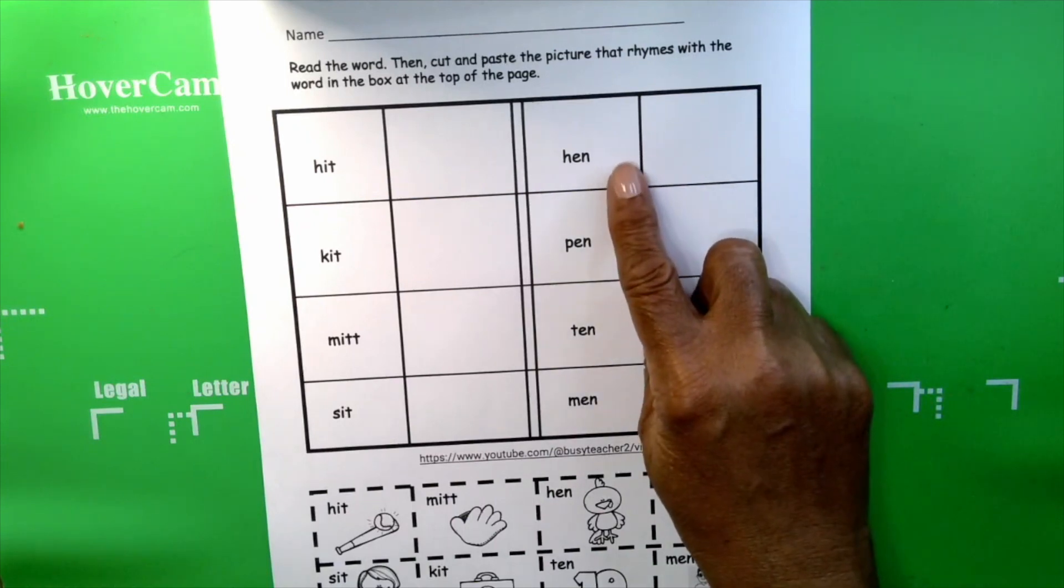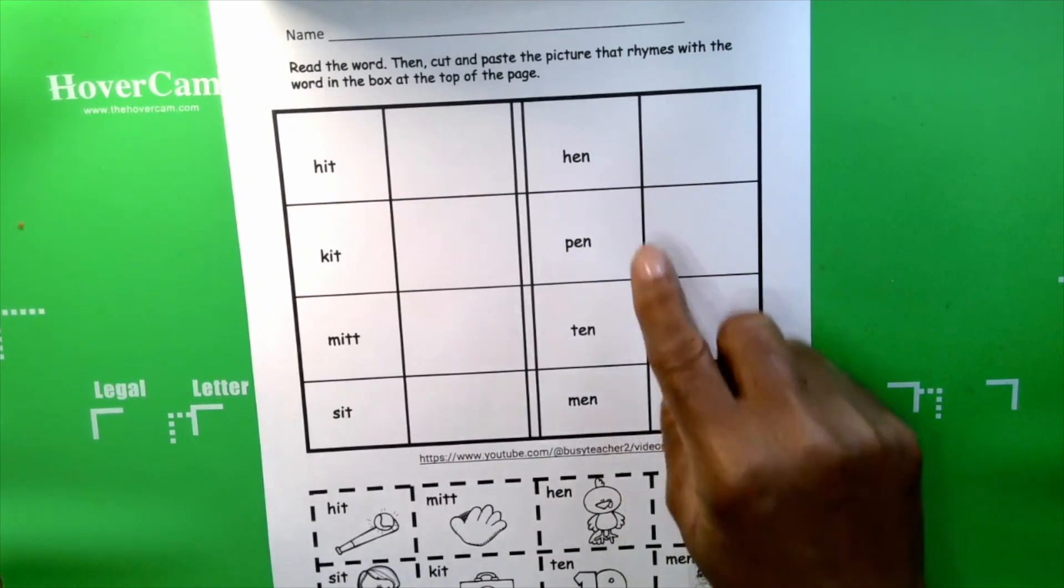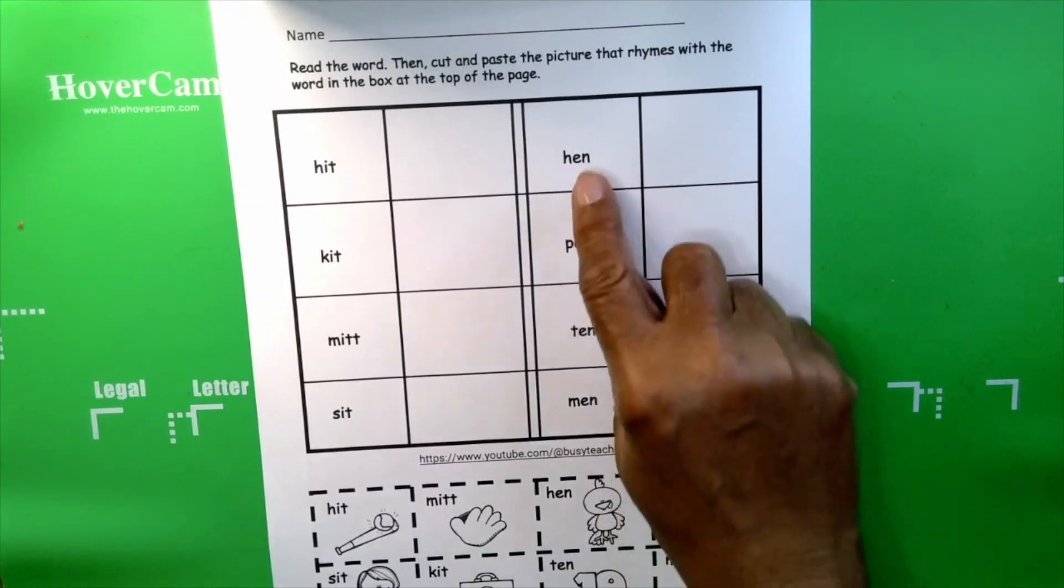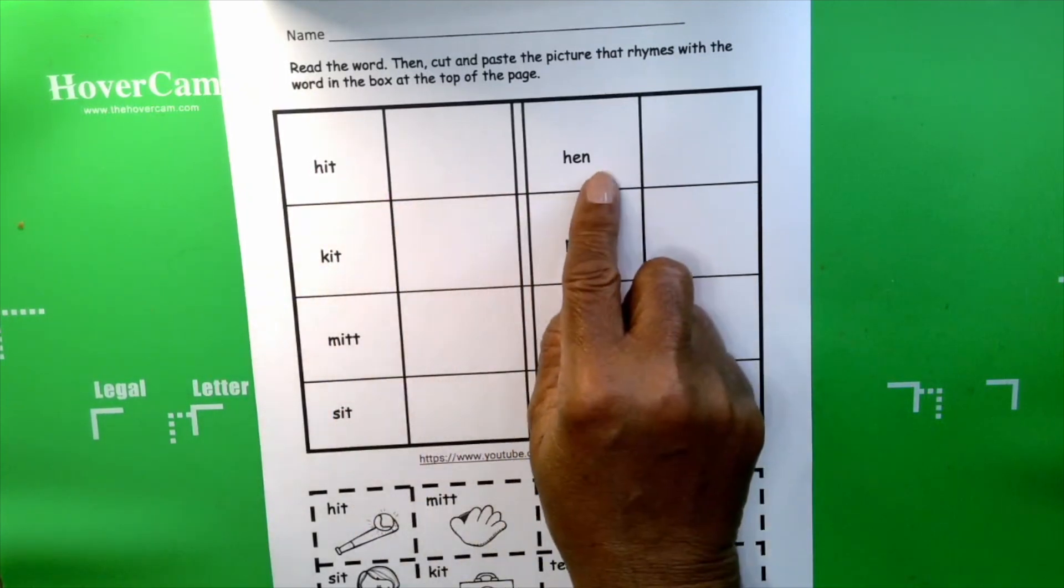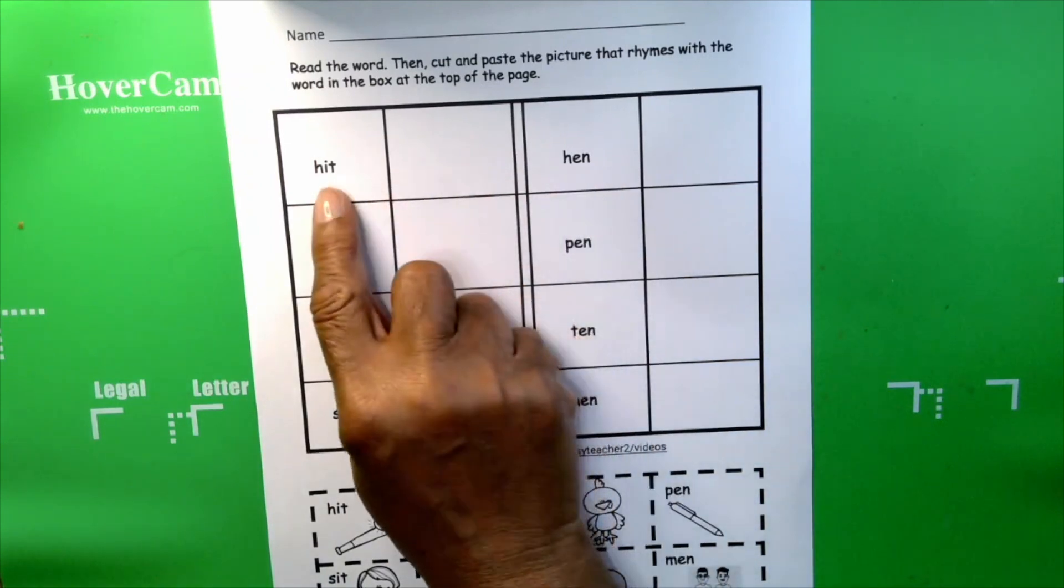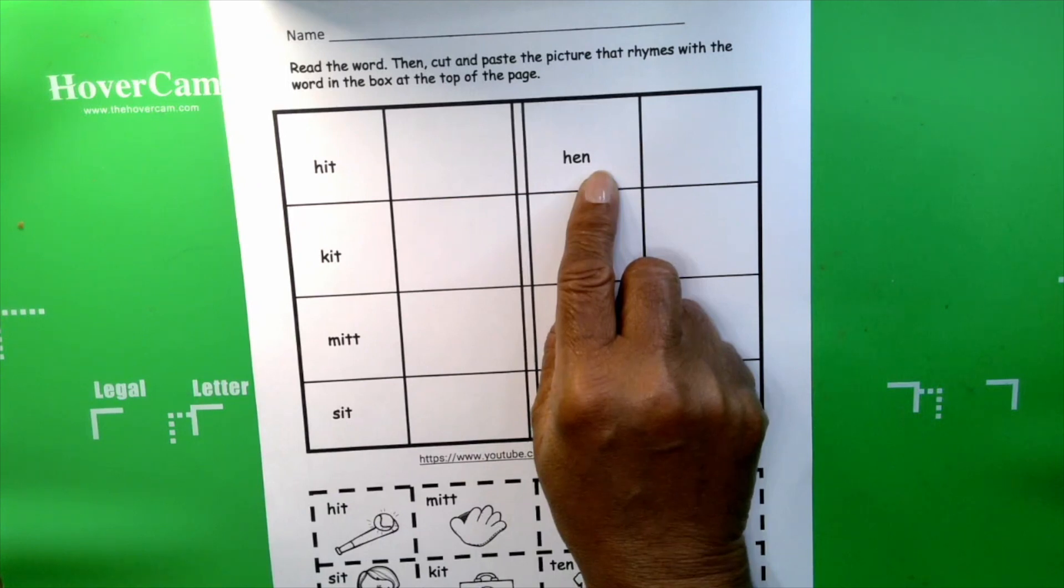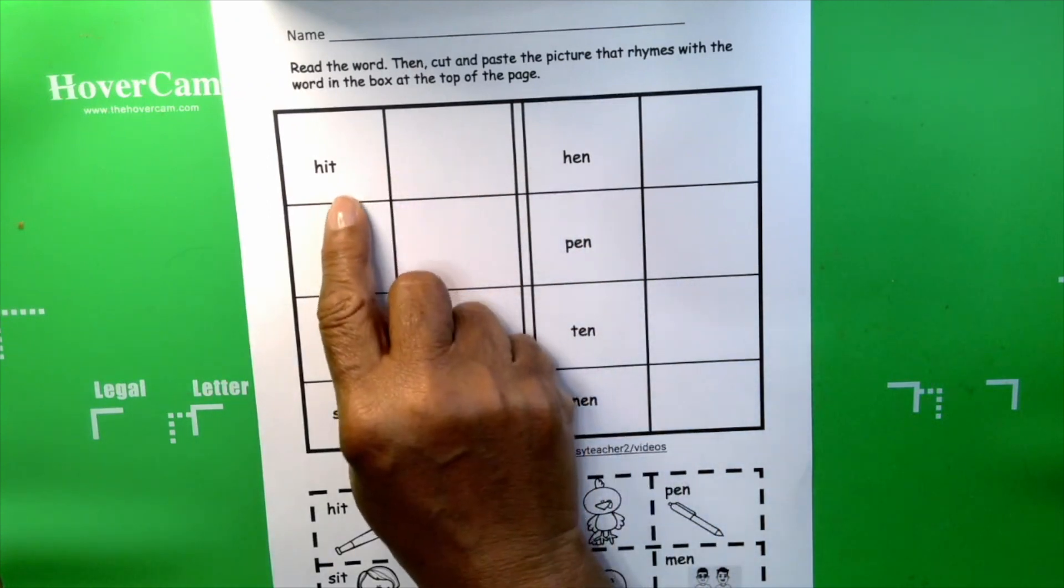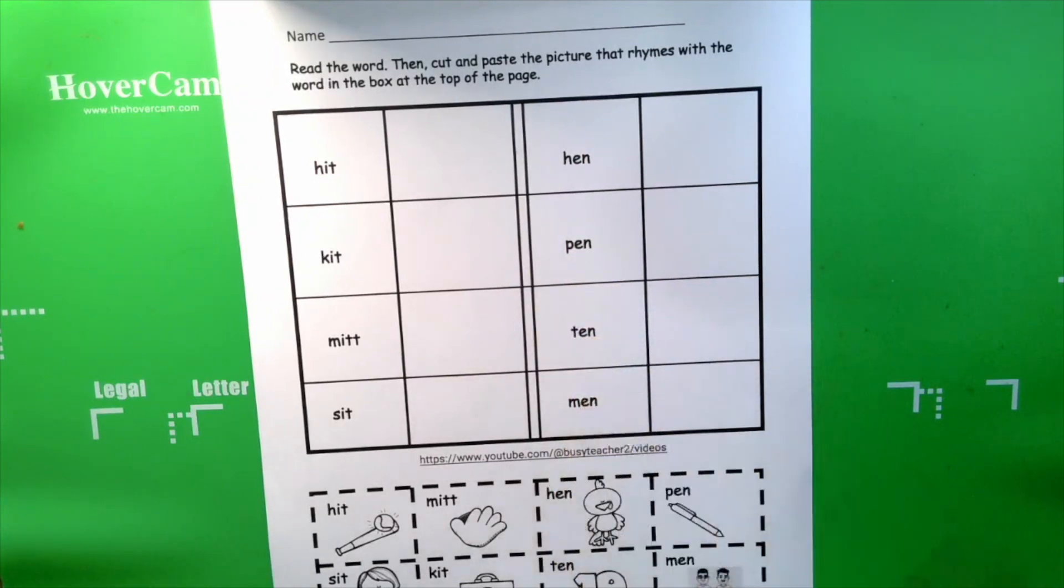Hen, repeat hen, pen, ten, men. All of these words are rhyming because they have the same ending sound. The only thing I changed was the beginning sound. Take a look. Hit, hen. Do those words rhyme? Hit, hen? No, they don't rhyme because they do not have the same ending sound. These are the 'it' words, these are the 'en' words.